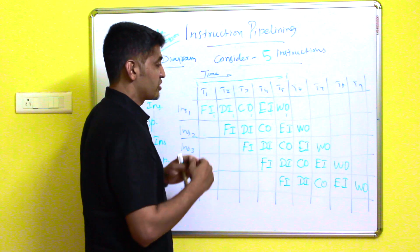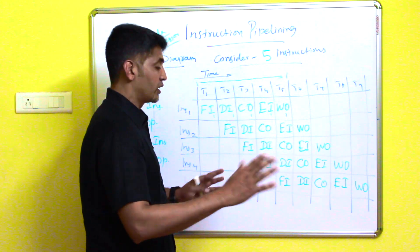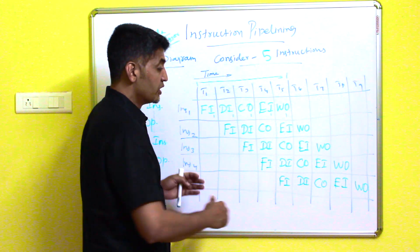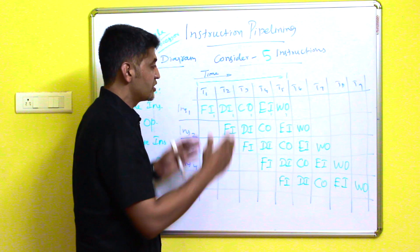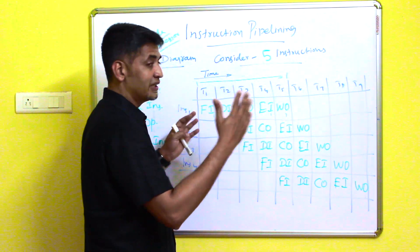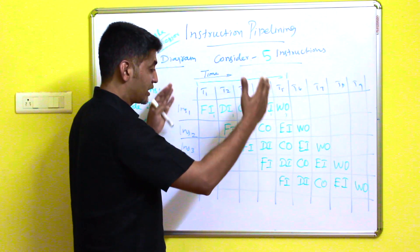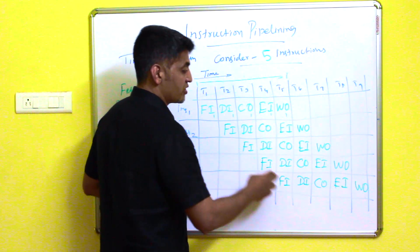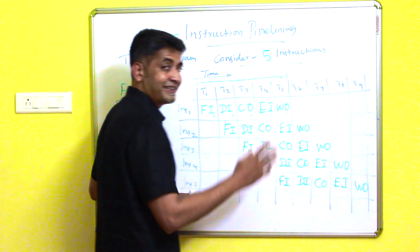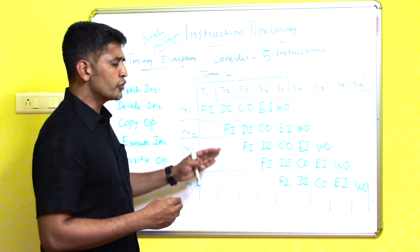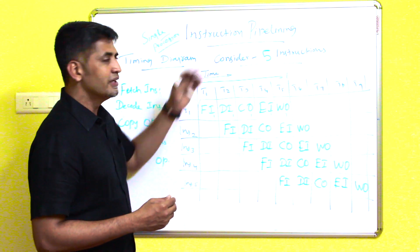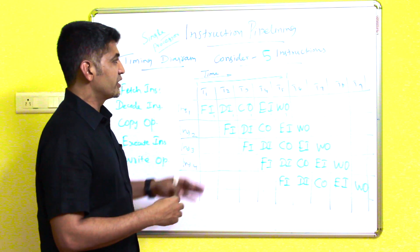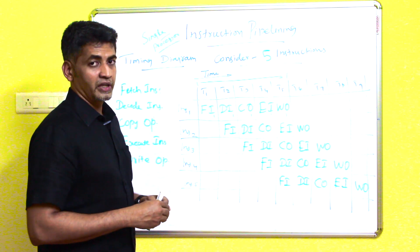Without pipelining, t5 time units are required for one instruction, so five instructions would require 5×5 = 25 time units. But with pipelining, all five instructions are executed within just t9 time units. This is the major advantage of instruction pipelining — it significantly improves processor performance.